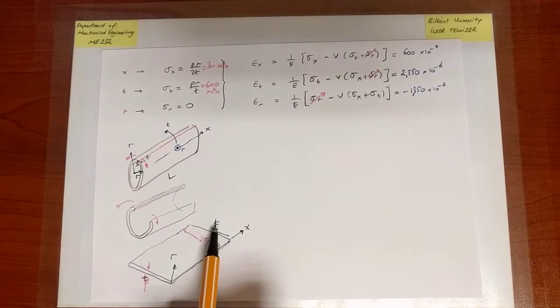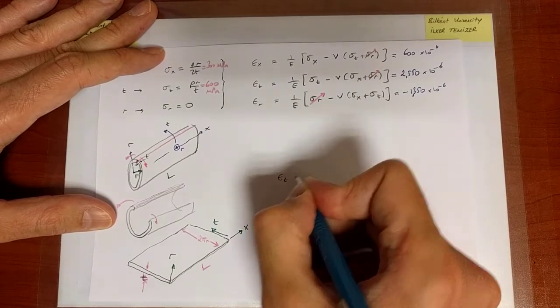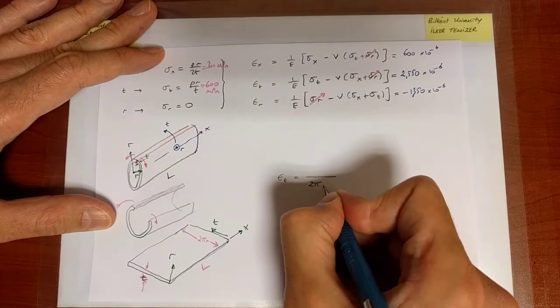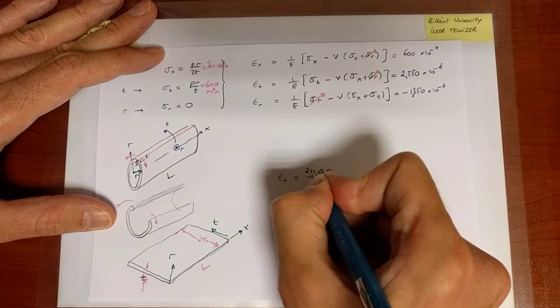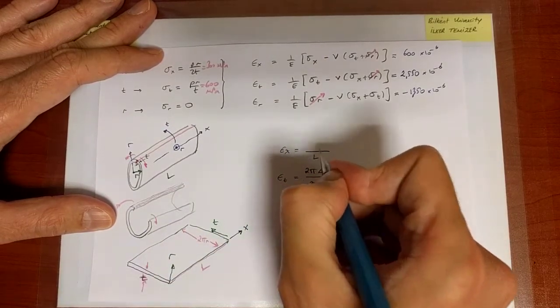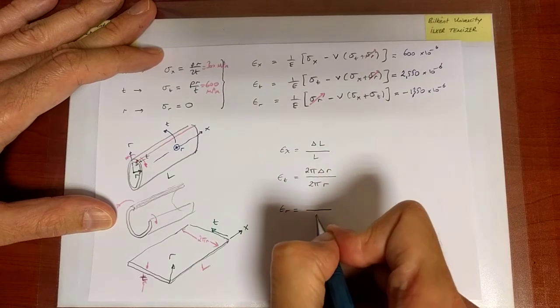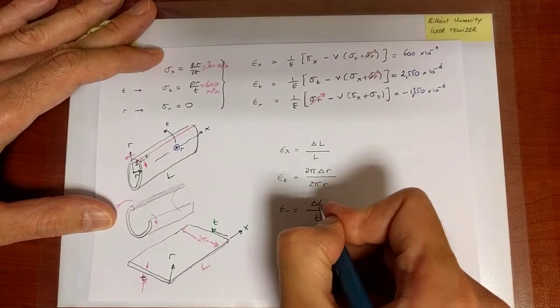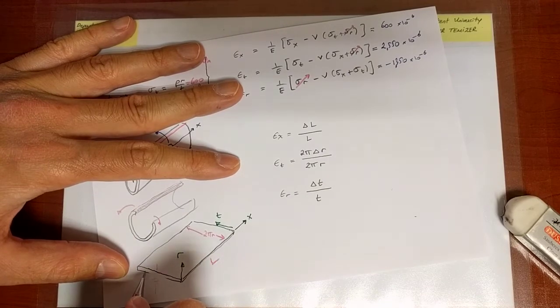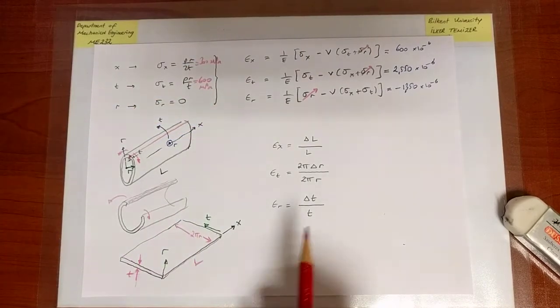So epsilon_t, the normal strain along t, would therefore have to do with the change in that dimension divided by the original length. The original length is 2πr, the change would be delta_r times 2π. Epsilon_x, that's the normal strain along that direction—the original length is L, the change in the length would be delta_L. In that direction the original length is t, and the change in the length is going to be delta_t. Therefore we have explicit expressions for these quantities.